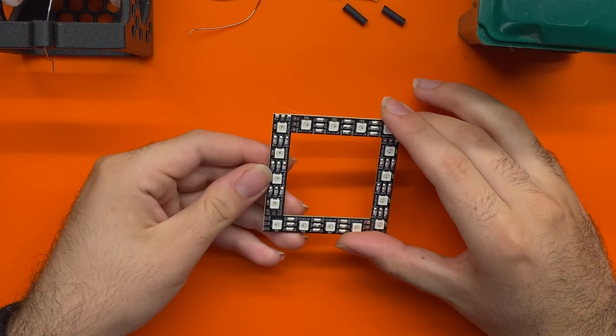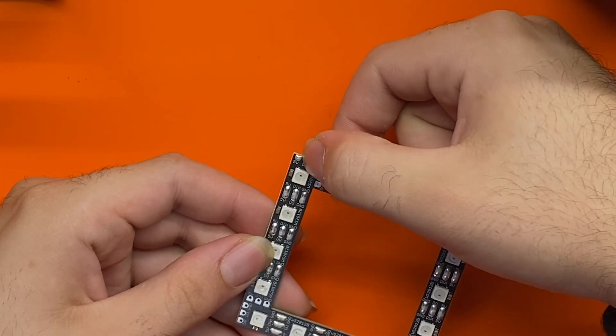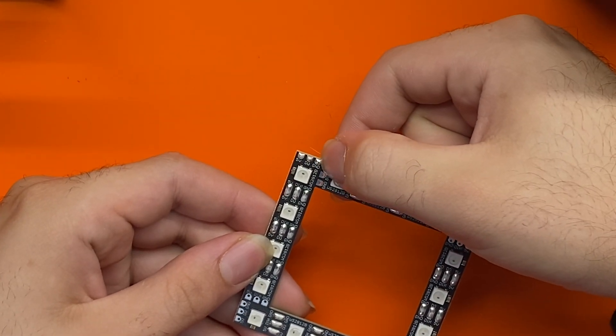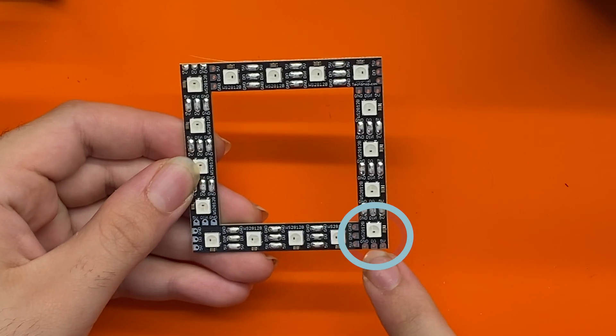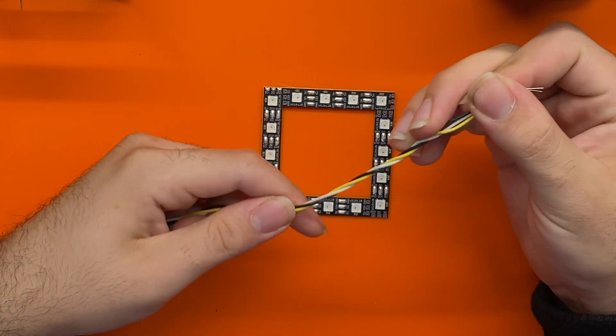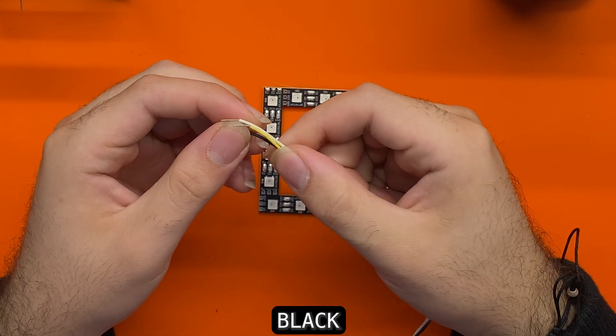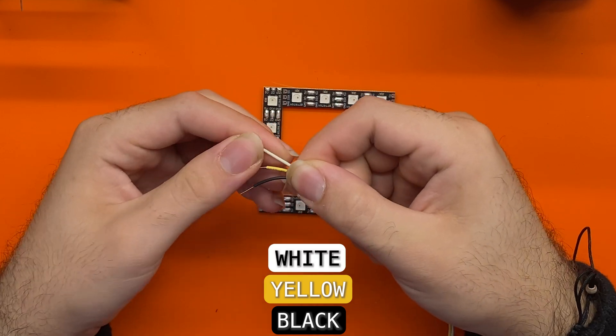Now we want to solder this in onto these holes. We're going to go into these holes. I'm going to put the black wire in the bottom, the yellow wire in the middle, white wire on top.